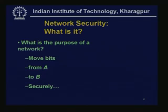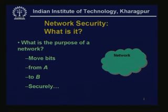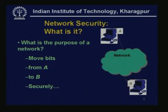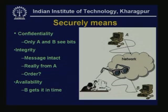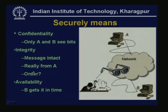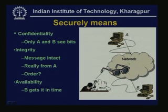What is network security? What is the purpose of a network? It moves bits from A to B, and we want this movement to be secure. What exactly do we mean by securely? Of course, bits from A must reach B, but we also want confidentiality — in the sense that only A and B see the bits. That means if there is someone in between, he cannot find out the content of the communication, because A may be a client and B may be a bank.